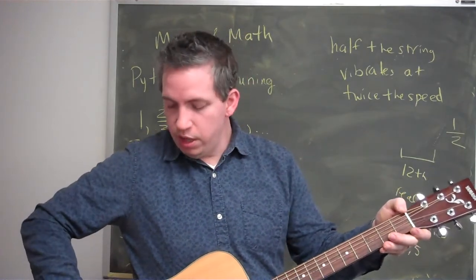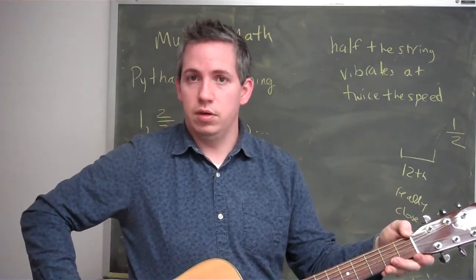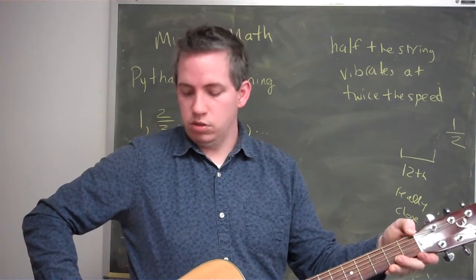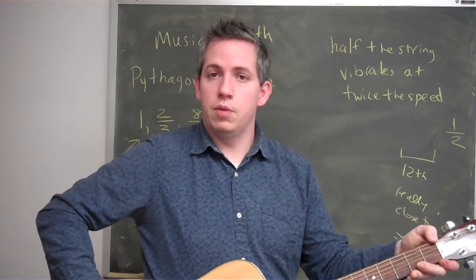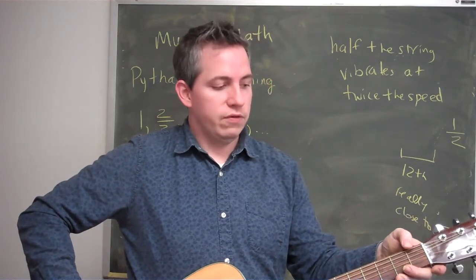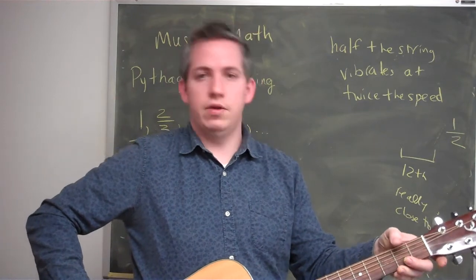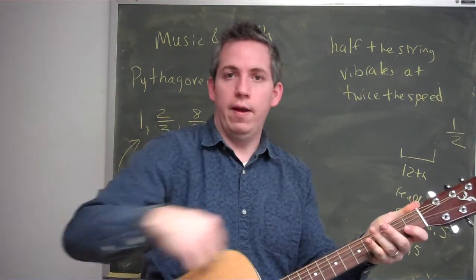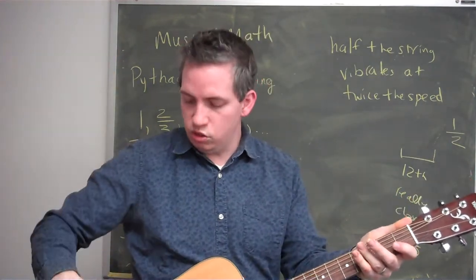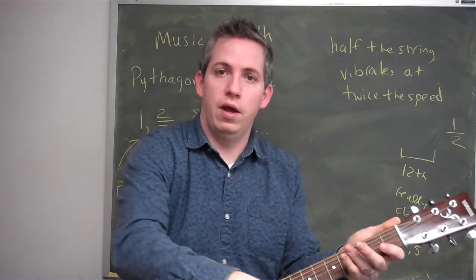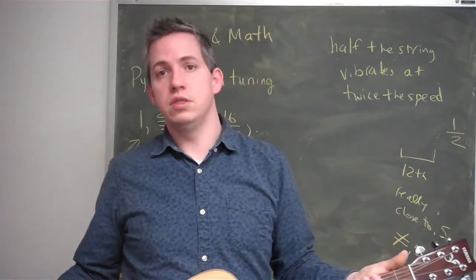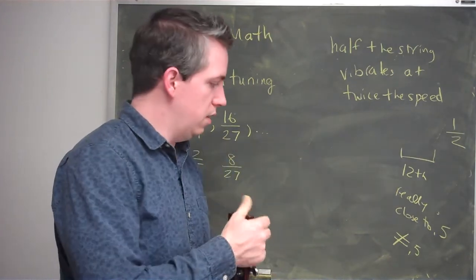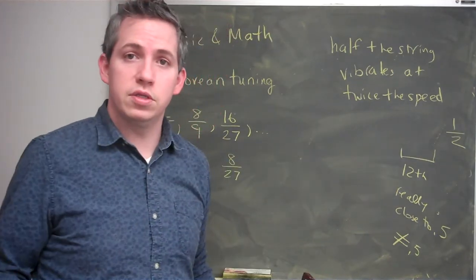Once you get there, you've basically figured out where to put the frets on a guitar. If you measured the length of the string — suppose it's thirty inches — and multiplied those fractions by thirty inches, you'd get different lengths like twenty-six inches or twenty-seven inches. You'd measure from one end and put the fret there. And as you do that, you'd have essentially just built a guitar. So that's pretty much where it's coming from.